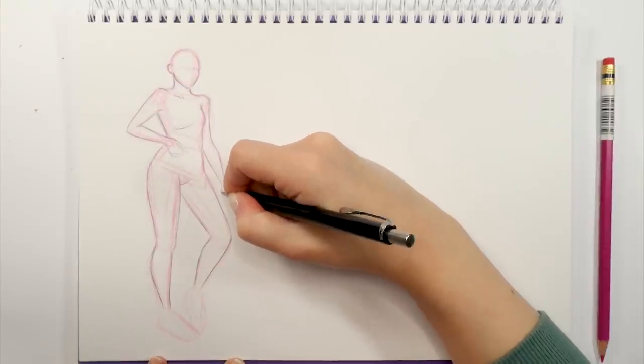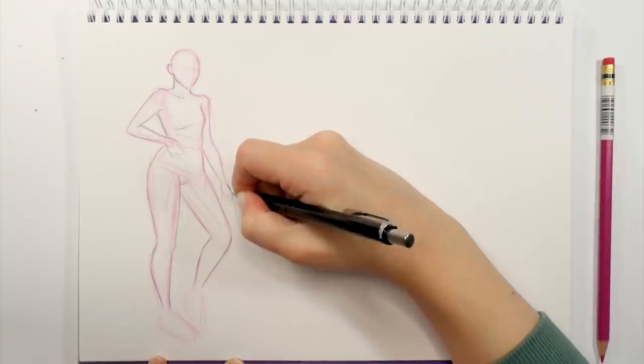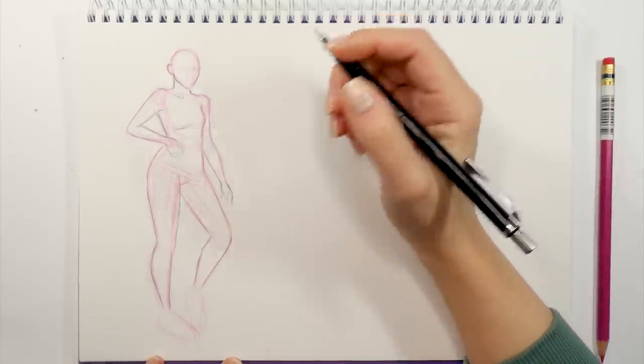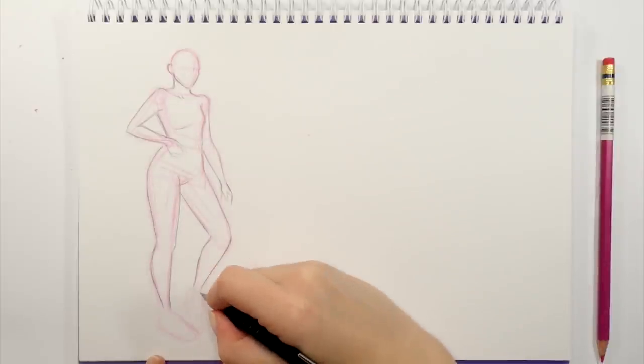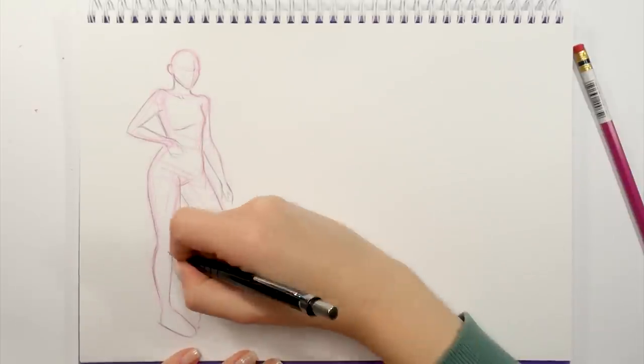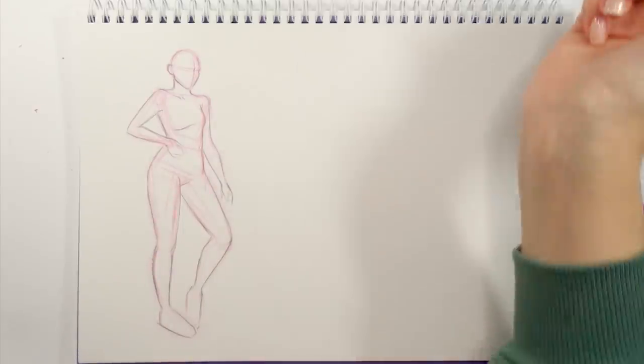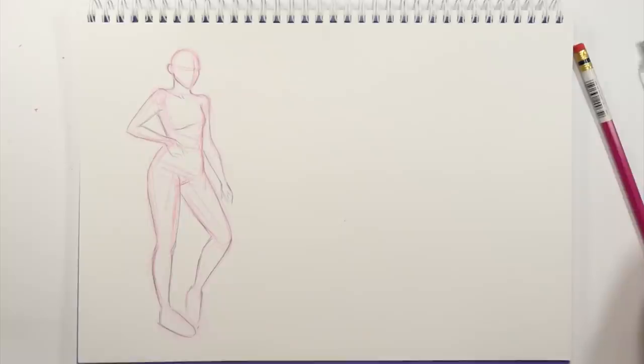Once I'm pretty happy with my construction and how my sketch is looking, I'm taking my mechanical pencil and I'm going over everything. Basically, I'm just marking the most crucial places. I'm doing this outline for the body shape. And yeah, this is pretty much all. It was quite simple, wasn't it?